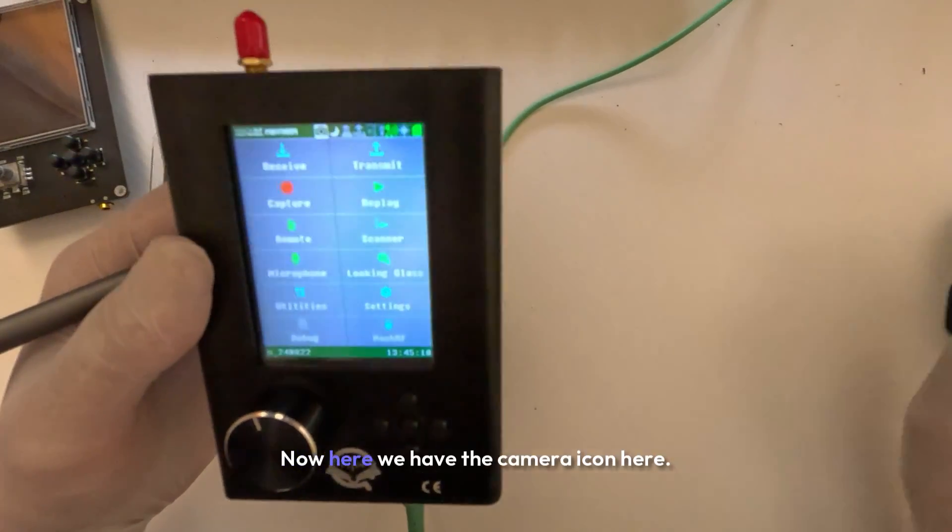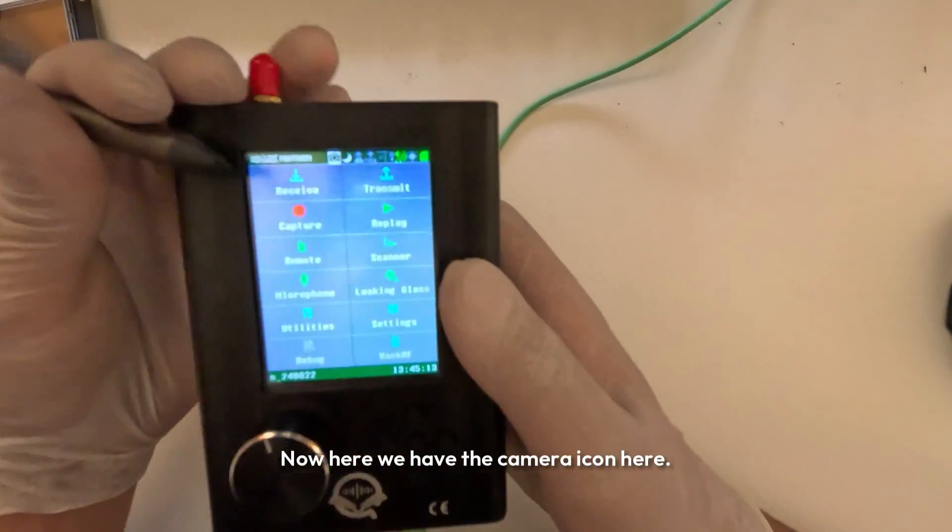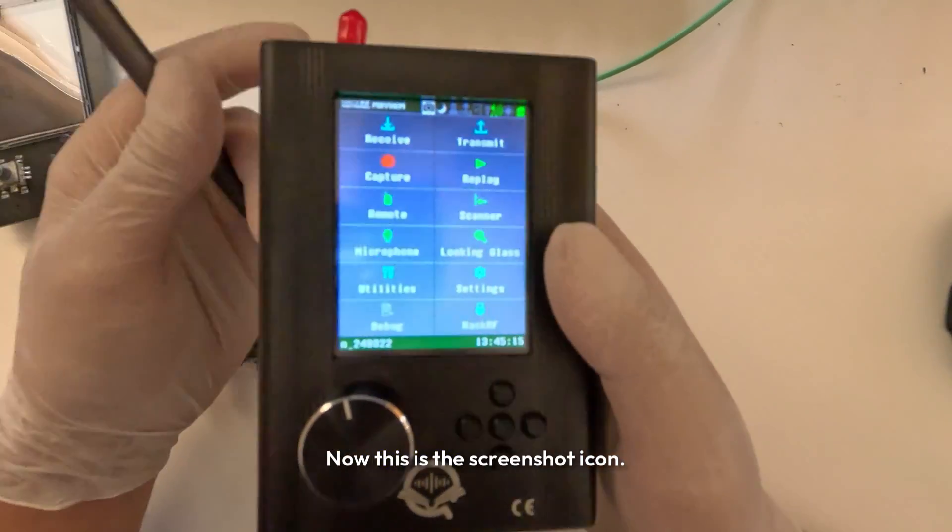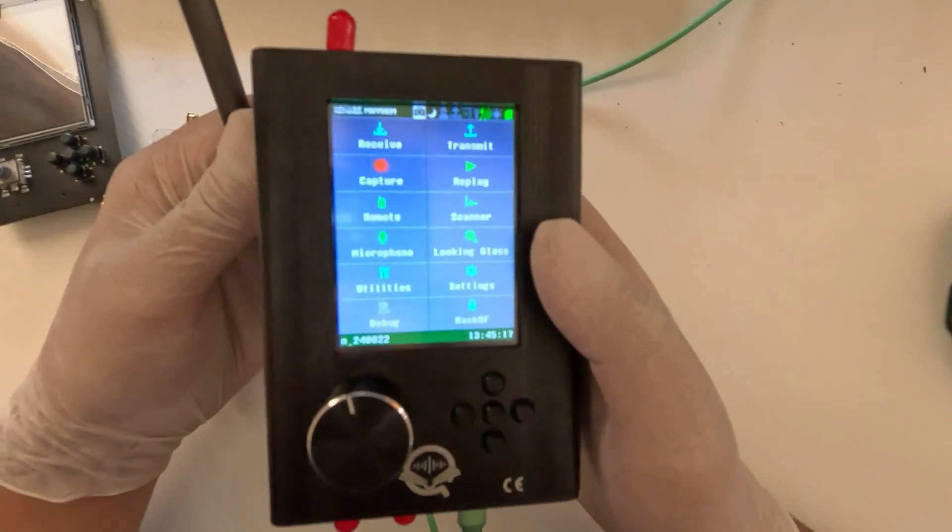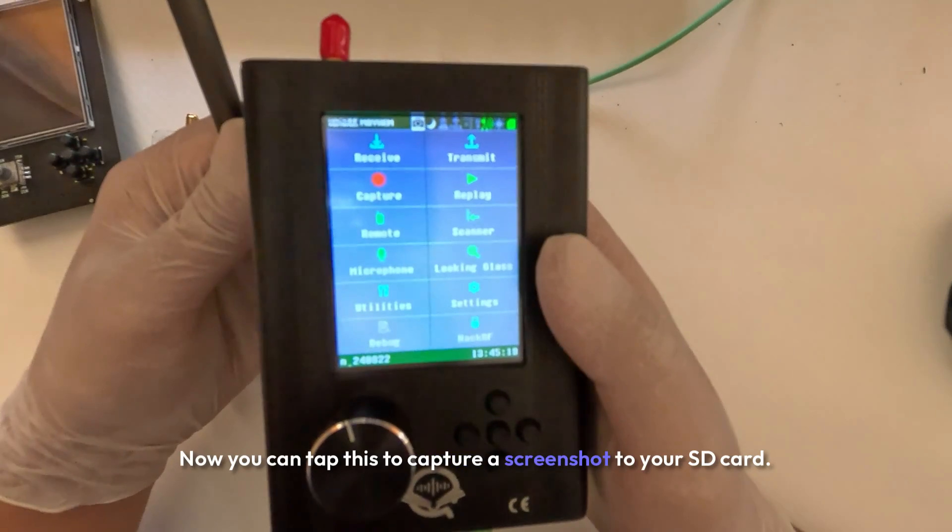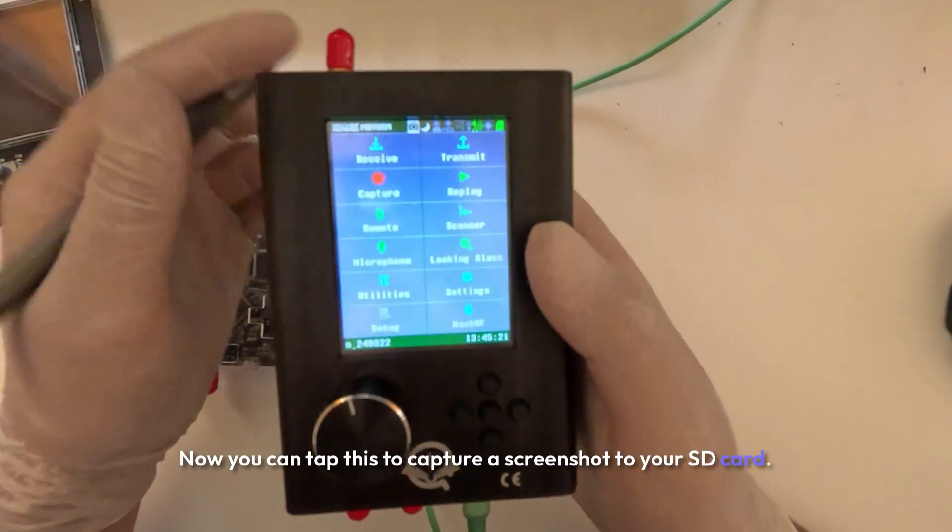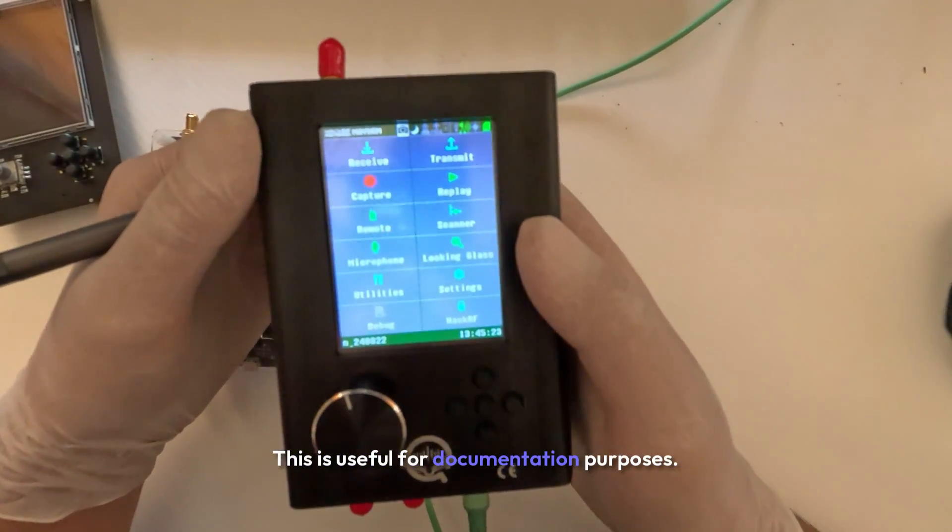Here we have the camera icon. This is the screenshot icon. You can tap this to capture a screenshot to your SD card. This is useful for documentation purposes.